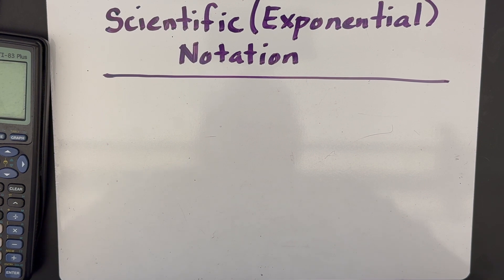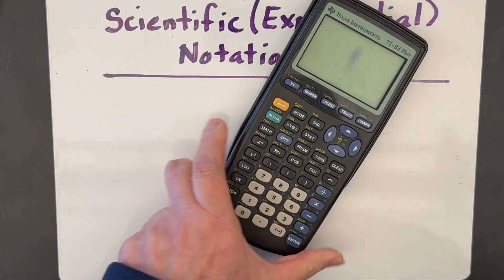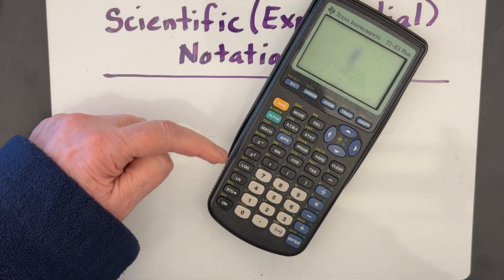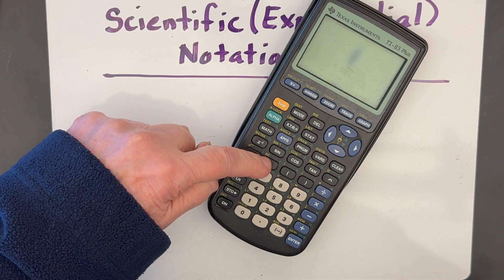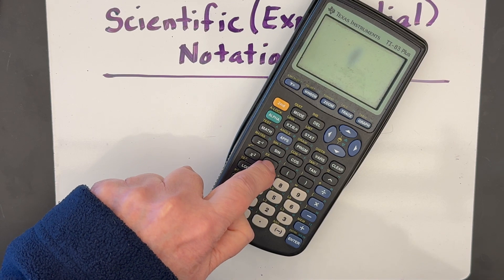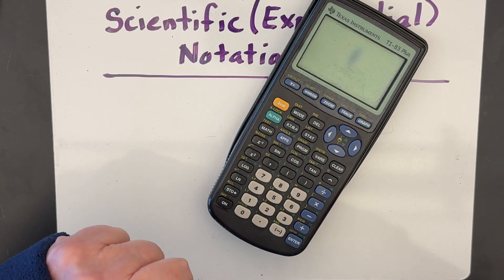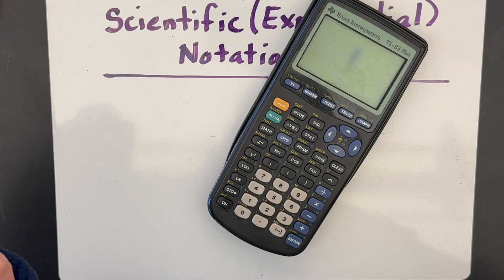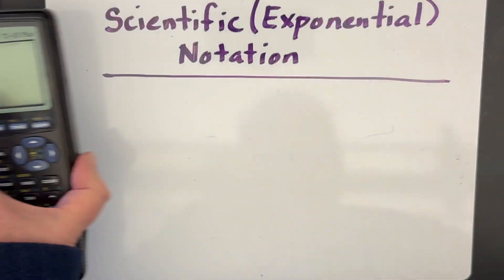Today I'm going to talk about scientific notation. It is sometimes called exponential notation, and that's why on your calculator it's actually represented as EE, which is above the comma button. On some calculators they actually have an EE button and you don't have to hit second first to get to it.